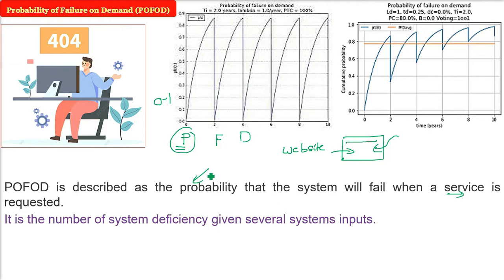It is the number of system deficiencies, system problems, system defects, given several system inputs. When you give certain kinds of inputs, the system fails to fulfill our request for a demand.